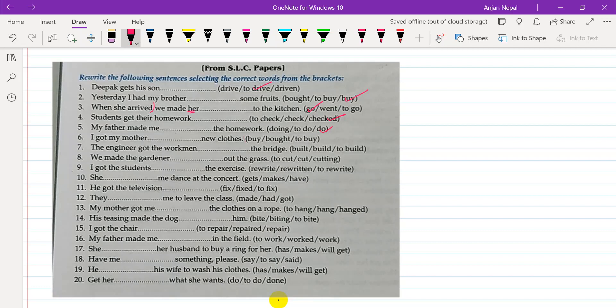I got my mother to buy new clothes. The engineer got the workman to build the bridge. We made the gardener cut. Very good.